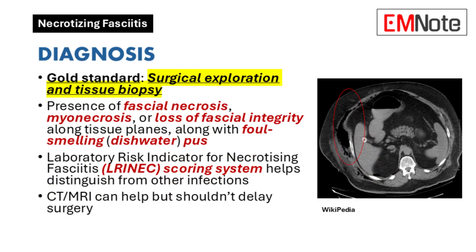Surgical exploration and tissue biopsy remain the gold standard for diagnosing necrotizing fasciitis. The presence of fascial necrosis, myonecrosis, or loss of fascial integrity along tissue planes, along with foul-smelling or dishwater pus, is diagnostic. The Laboratory Risk Indicator for Necrotizing Fasciitis (LRINEC) scoring system can also help distinguish it from other soft tissue infections — a score of 6 or higher is highly suggestive. Imaging techniques including CT and MRI can provide additional information, but should not delay surgery.